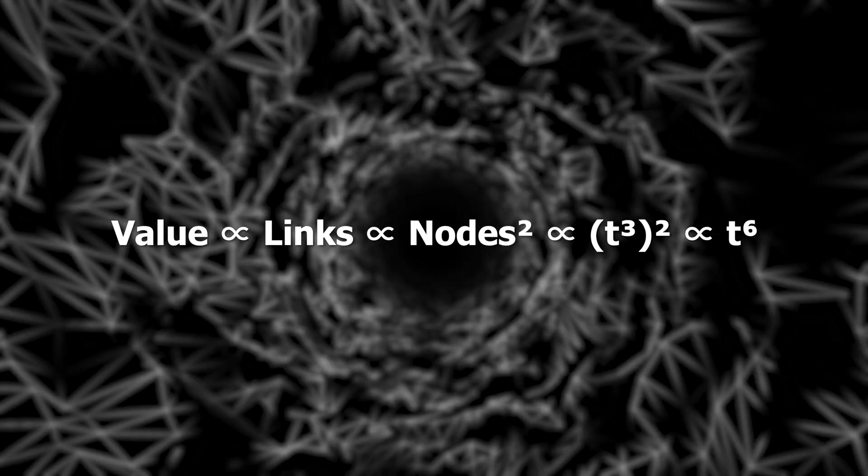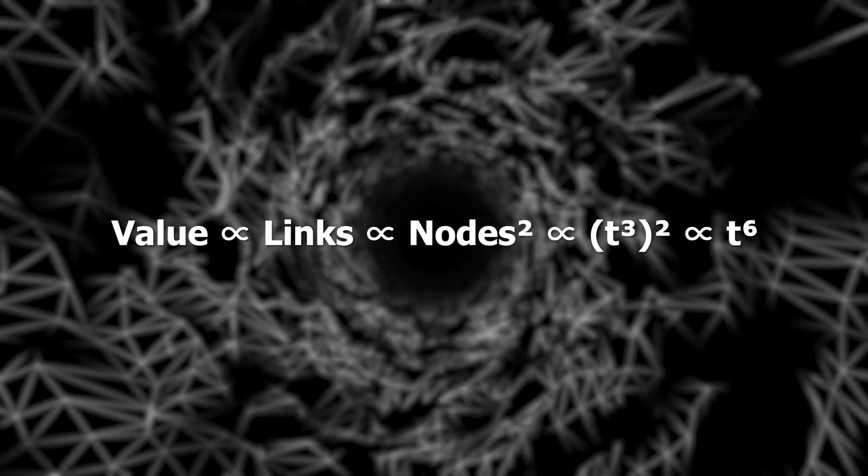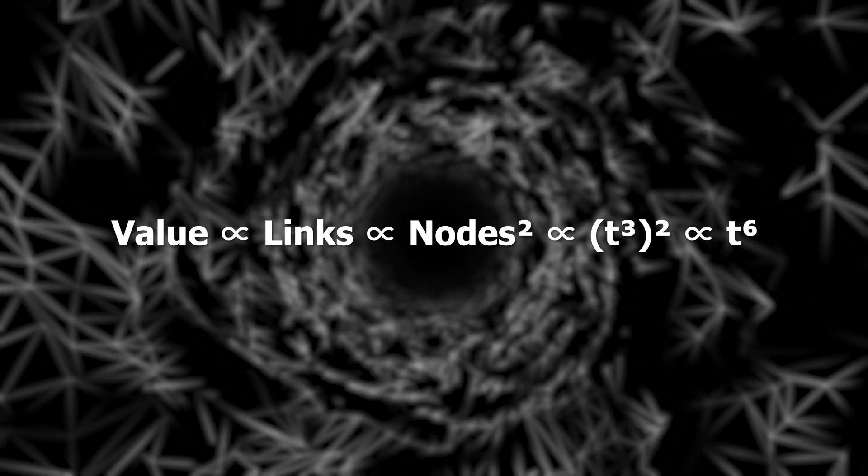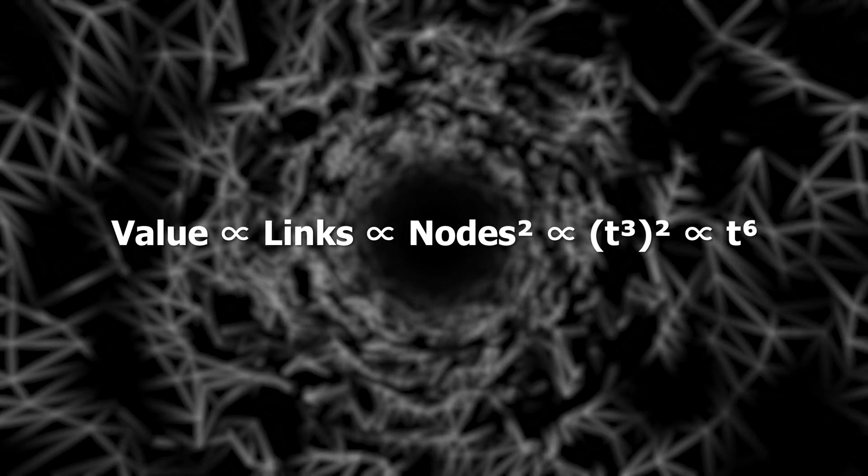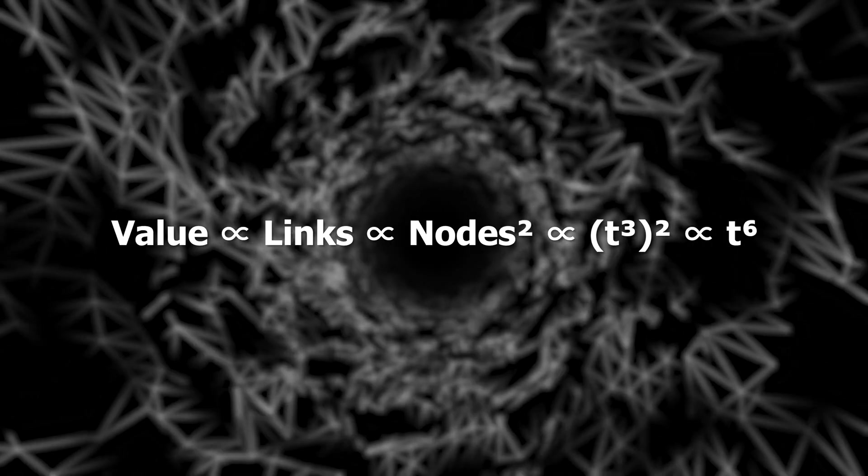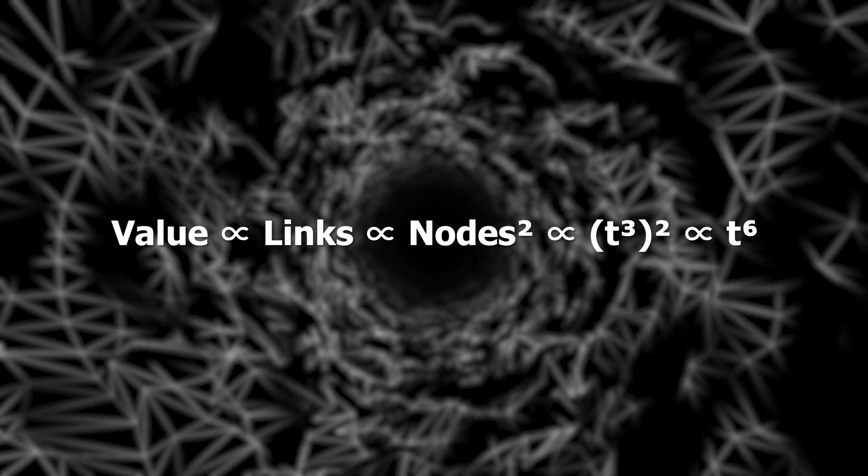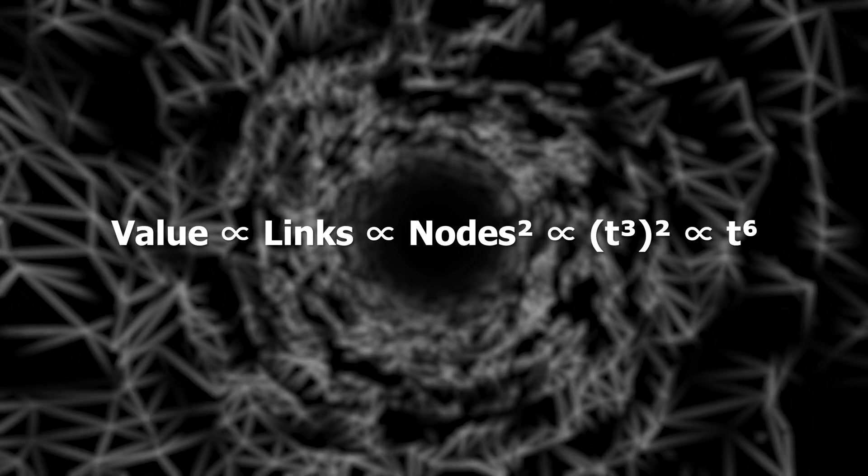Here is the final equation that ties everything together. Value is proportional to the number of links, which is proportional to the square of the number of nodes. This is also proportional to time cubed, squared again, meaning time to the power of 6. This equation captures the relationship between value, adoption, and time, emphasizing Bitcoin's growth is a self-reinforcing, iterative process governed by power laws.